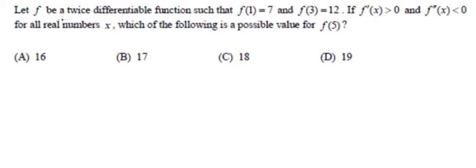Let f be a twice differentiable function such that f of 1 is equal to 7 and f of 3 is equal to 12. If the first derivative of the function is positive and the second derivative of the function is negative for all real numbers x, which of the following is a possible value for f of 5?